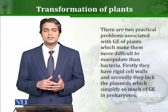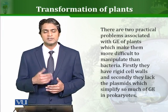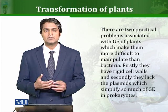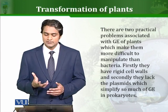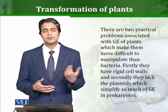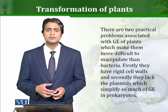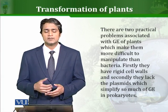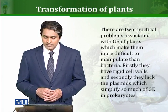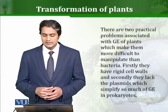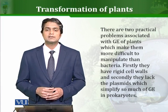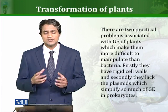Higher organisms are much more advanced and developed as compared to unicellular organisms like yeast. Their structure is far more complex, so we have to struggle a lot in order to introduce foreign DNA in plant cells. There are two major problems: first, they have a rigid cell wall, and secondly, they lack plasmids — the plasmids which simplify so much of genetic engineering in prokaryotes.